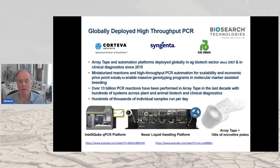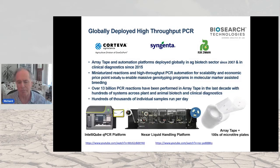On the left you see the IntelliQube, a qPCR platform; the Nexar is an endpoint machine. Both rely on the array tape technology shown on the right, which is effectively hundreds of microtiter plates — 768 wells at a time — in a long array, allowing very high-throughput qPCR or PCR.